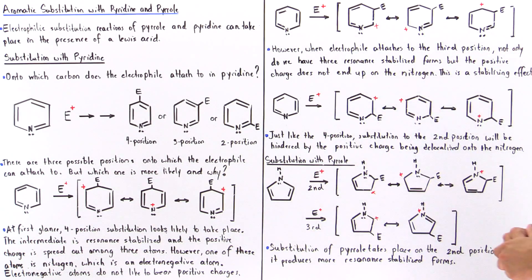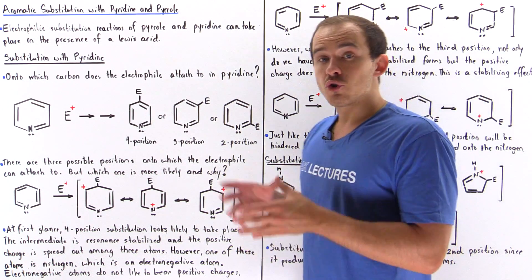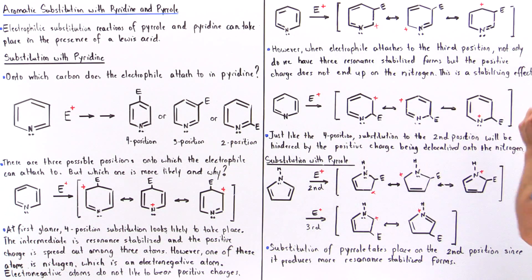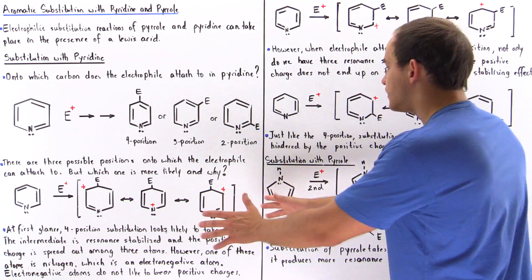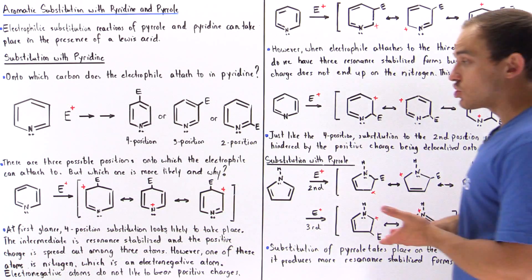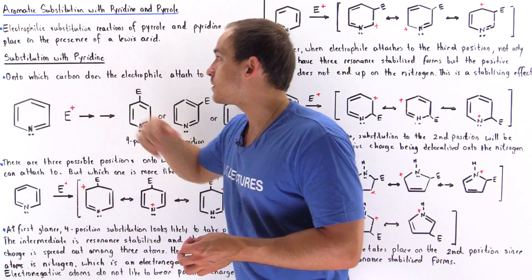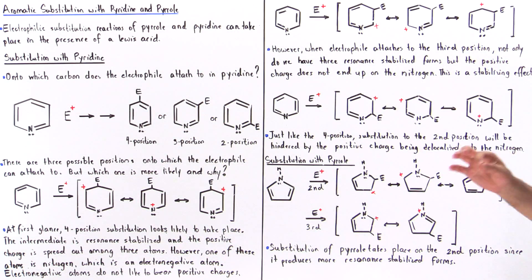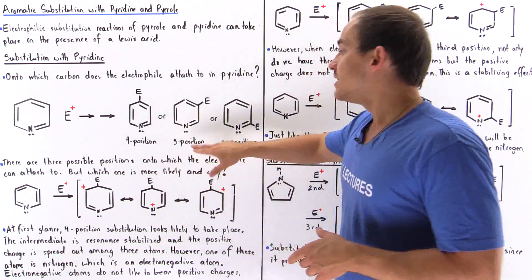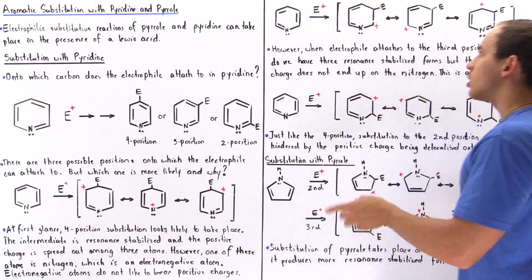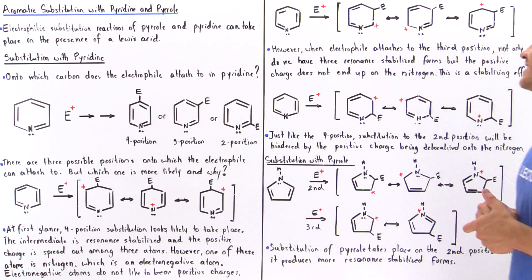What about the second position? A similar examination of the resonance forms for second-position substitution shows that we also have three resonant forms, but the positive charge is also found on the nitrogen in one of these forms. Just like the fourth position, this creates a destabilizing effect. So when pyridine reacts with an electrophile via electrophilic substitution, the electrophile will most likely attach onto the third position and not the fourth or second position, because at the third position the charge is not delocalized onto the electronegative nitrogen atom.